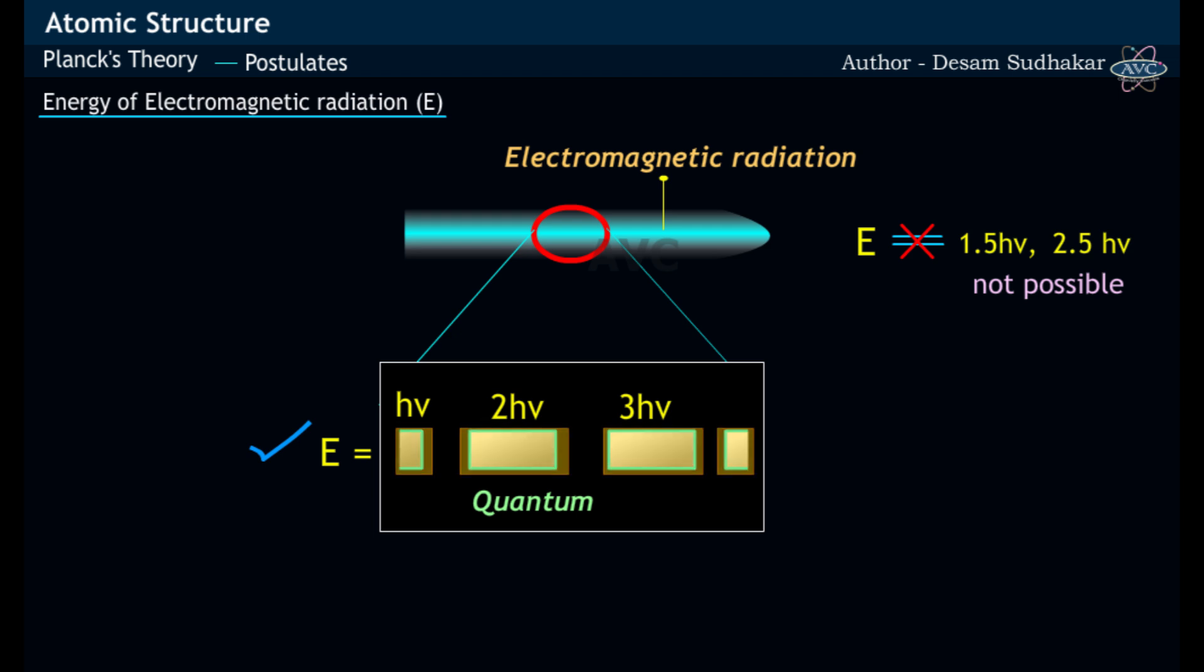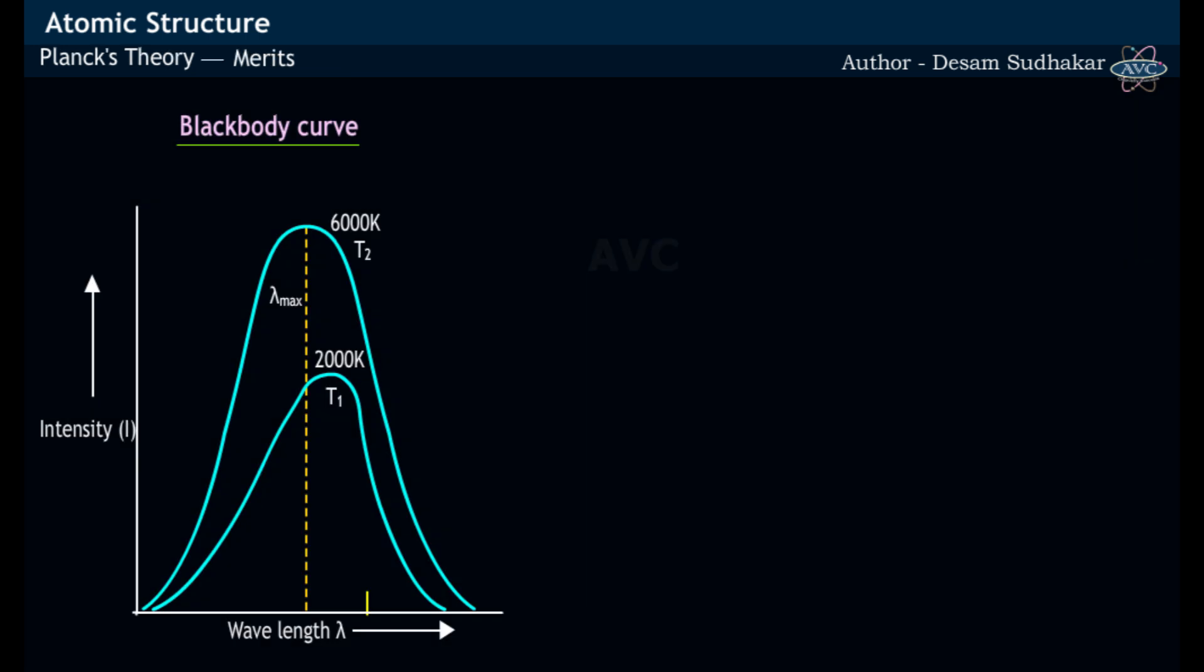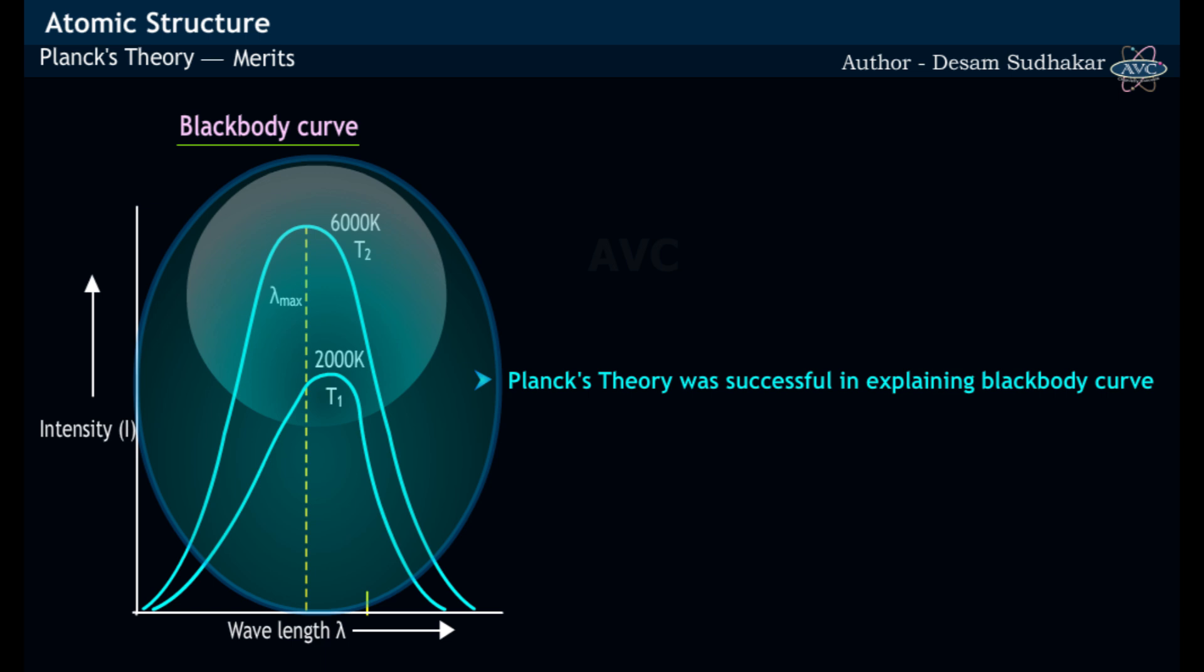That is, the energy of electromagnetic radiation is said to be quantized as it has fixed values. Thus, Planck was successfully able to explain the distribution of intensity of electromagnetic radiation emitted by the black body as a function of wavelength.